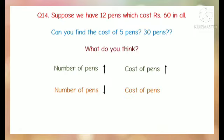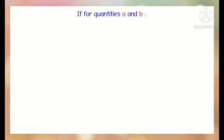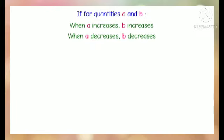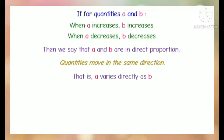Quantity of pens and their cost move in the same direction. If for quantities A and B, when A increases B increases, and when A decreases B decreases, then we say that A and B are in direct proportion. Quantities move in the same direction — that is, A varies directly as B.